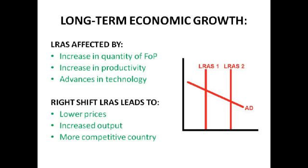Now we're going to look at this on the LRAS, which shows the ability of the economy to produce goods and services — the maximum total capacity it has to do so. This is affected by the quantity of the factors of production available. Countries with larger populations and more resources in the land have a greater ability to produce goods and services, because they have more factors of production.